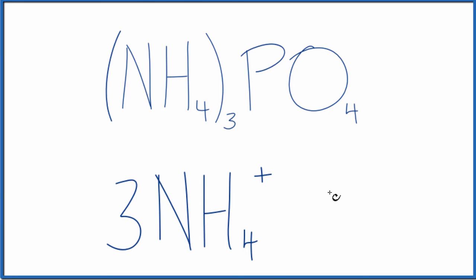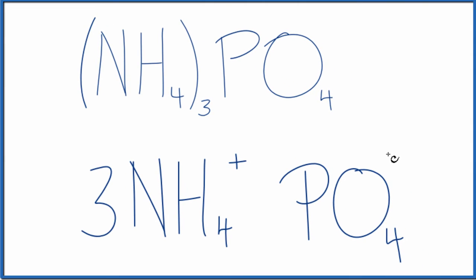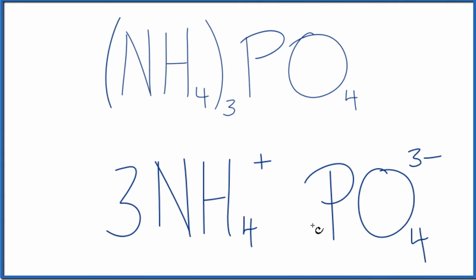And then PO4, that's the phosphate ion. And that has a three minus ionic charge, and that's on the whole thing. The plus here is on the whole NH4 ion. We only have one of these phosphate ions.